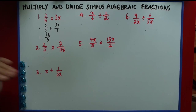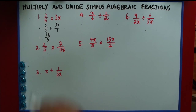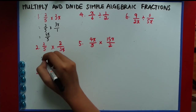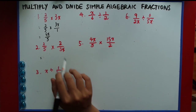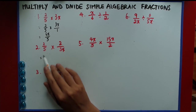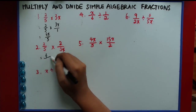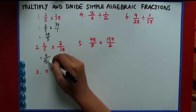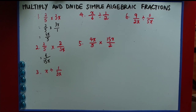Now we do the next one. The fraction here is slightly different. Just apply top times top, bottom times bottom, and you get 4 over 15x.